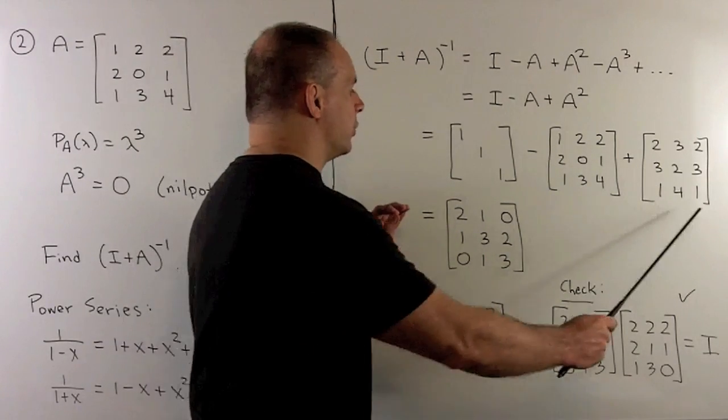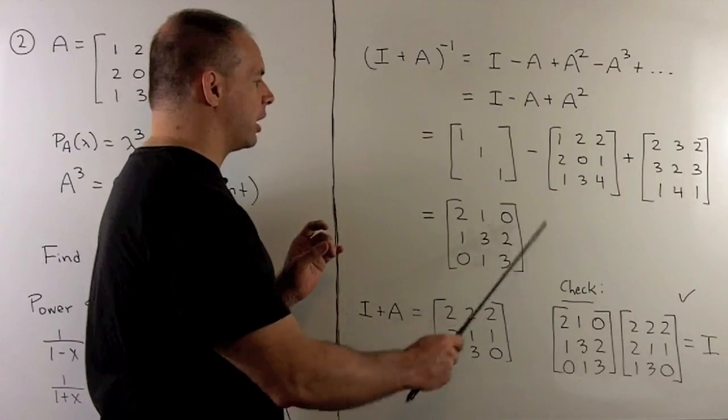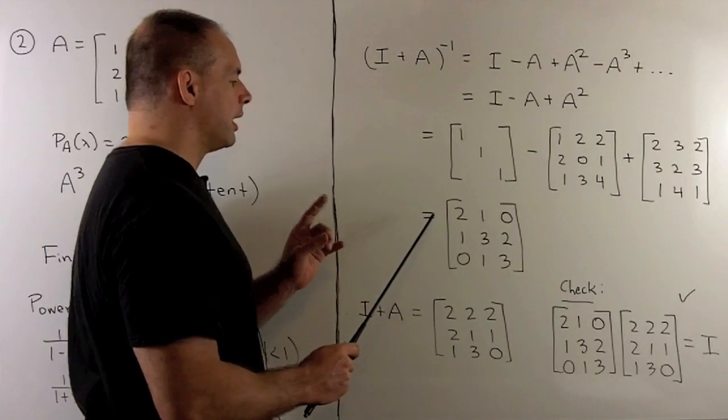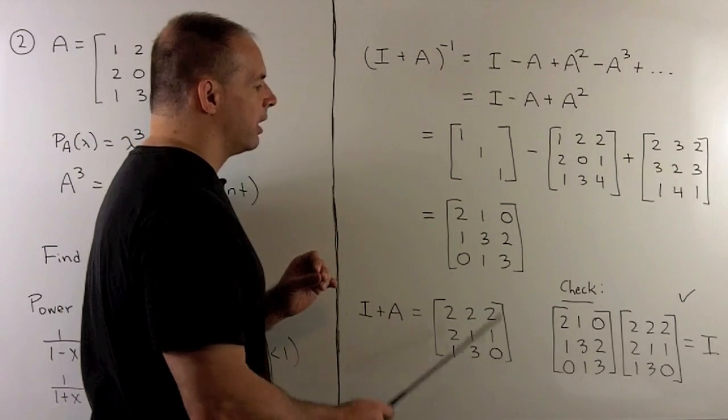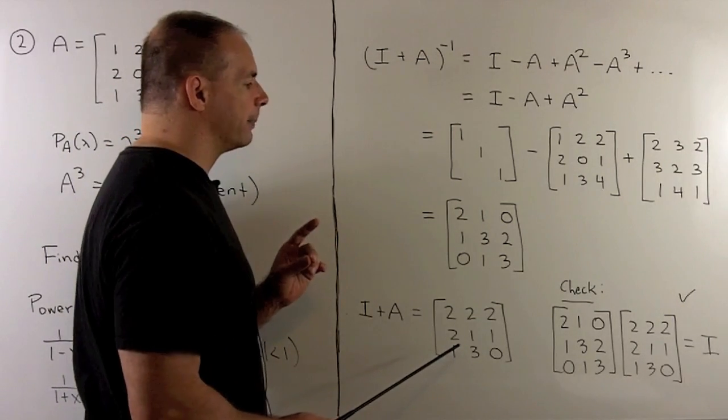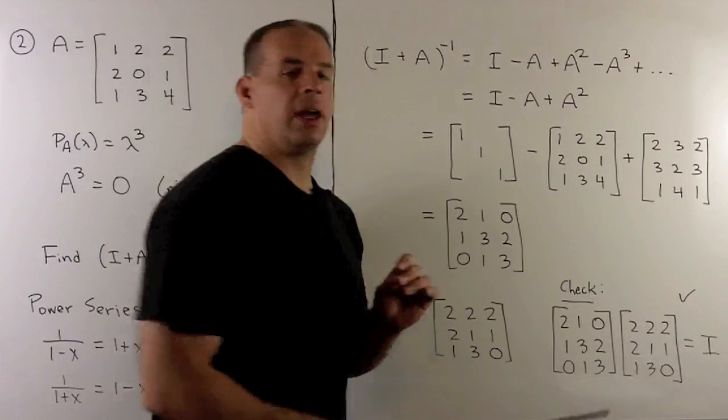If we work out each of those terms, compute the sum, we get this matrix here. I'll compute I plus A to get this matrix, and I'll check our work by multiplying. When we take the product, we get the identity matrix, and that's our check.